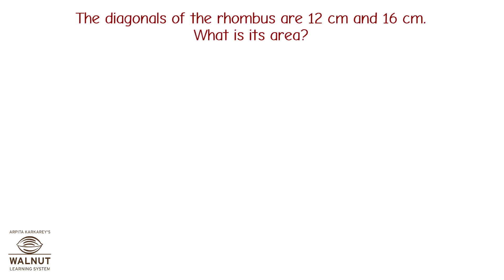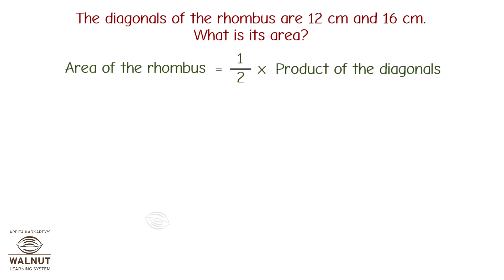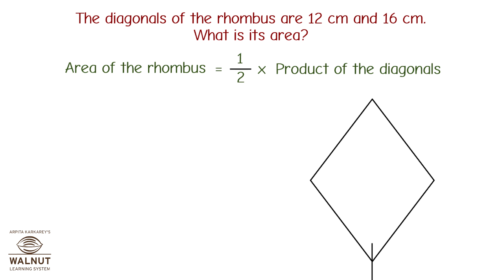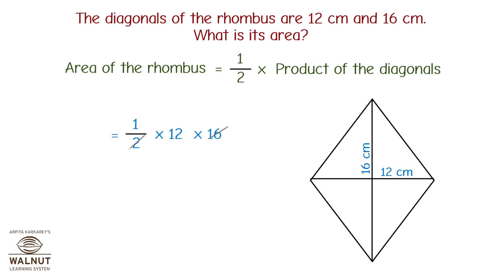Let's take a look at another one. The diagonals of a rhombus are 12 cm and 16 cm. What is its area? Area of the rhombus equals half into product of the diagonals, which equals half into 12 into 16. Therefore, area of the rhombus equals 96 cm².